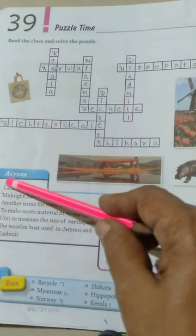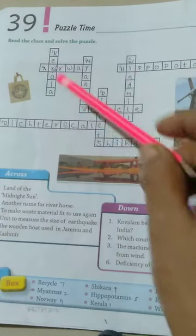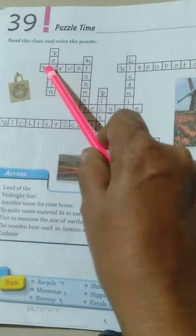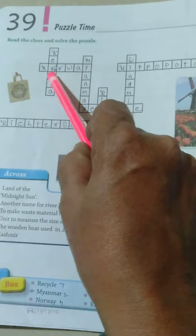...Mill. Now fourth question over here, Land of the midnight sun. Norway. Here in the box, I think there's a little bit of mistake. We have to write down Norway.